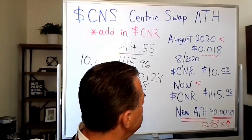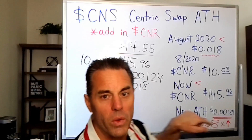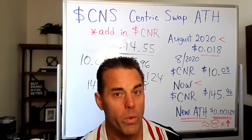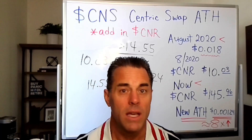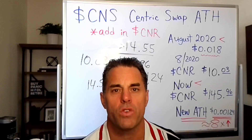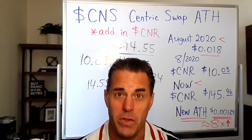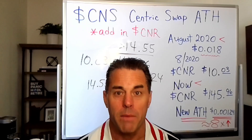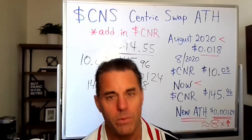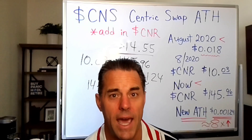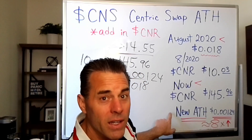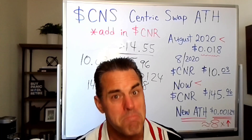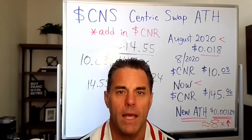So if the new all-time high is going to be 0.00124, how far away are we from that? Right now, CNS — I just checked before hopping on this video — it's trading at 0.0001607. If we multiply that number by 7.7 or 7.8, which is just under 8x, we're going to get that all-time high number.